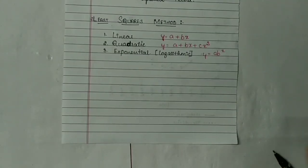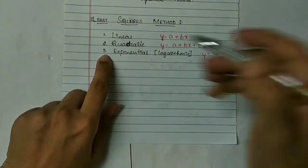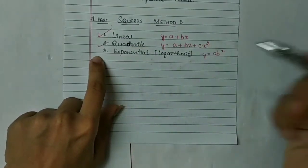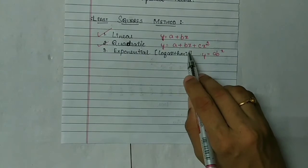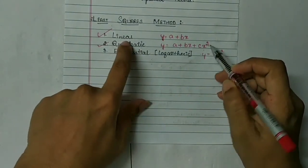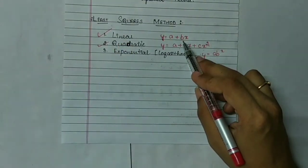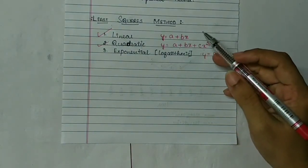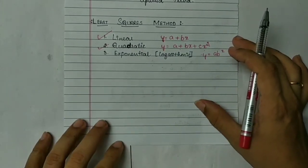We are done with the straight line method. For any given question, first calculate x, x squared, and xy; then simplify the formula to calculate a and b; then apply a and b to get all the trend values. That's it with the linear least square method. Now let us start with the quadratic method. The quadratic equation is y equals a plus bx plus cx squared.